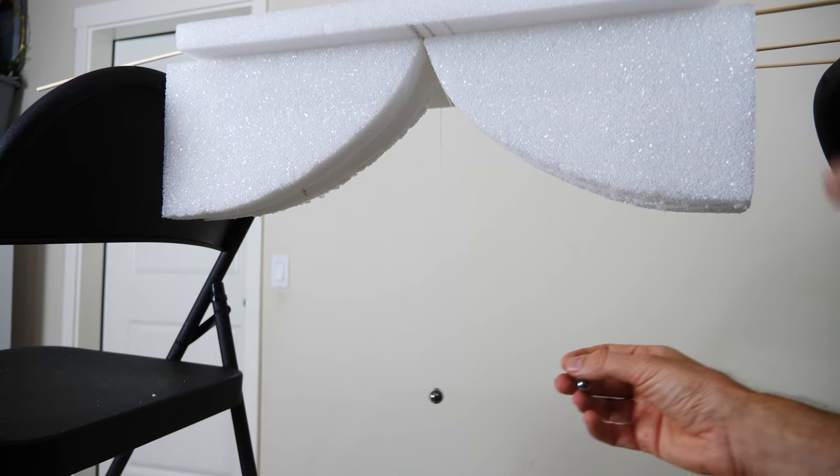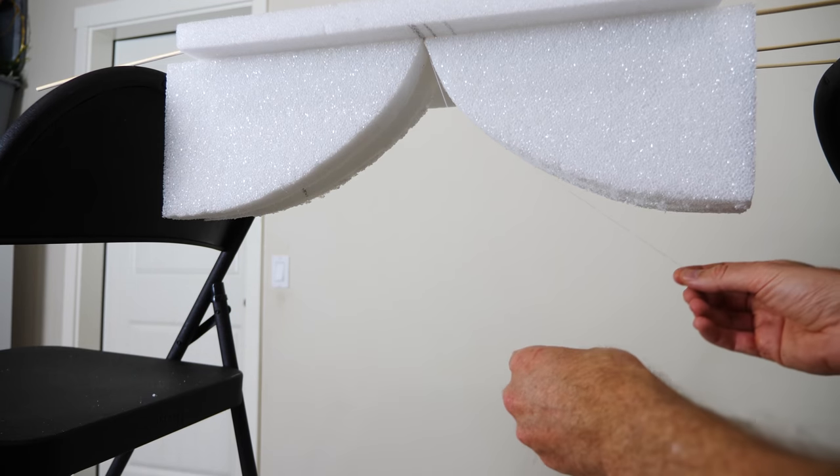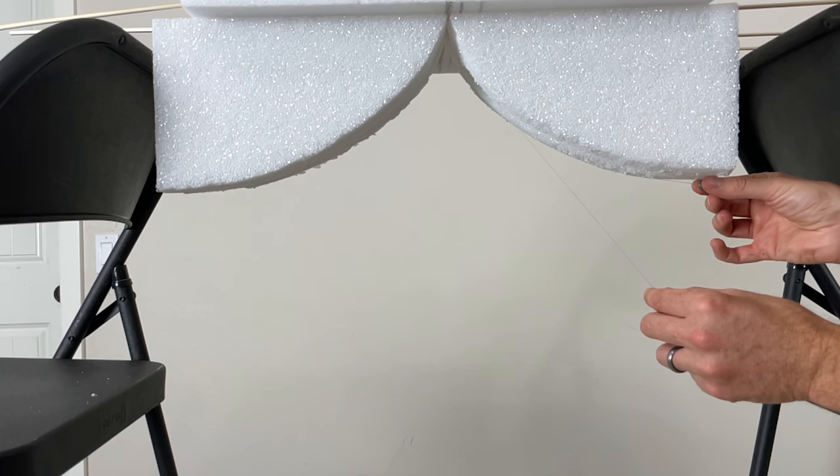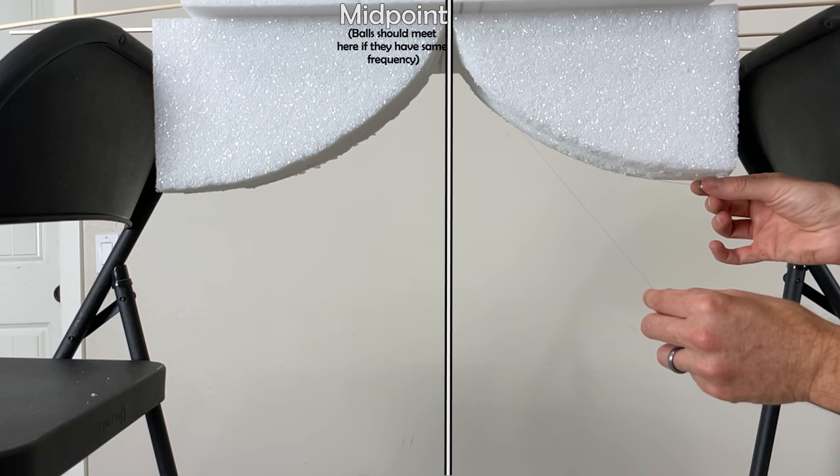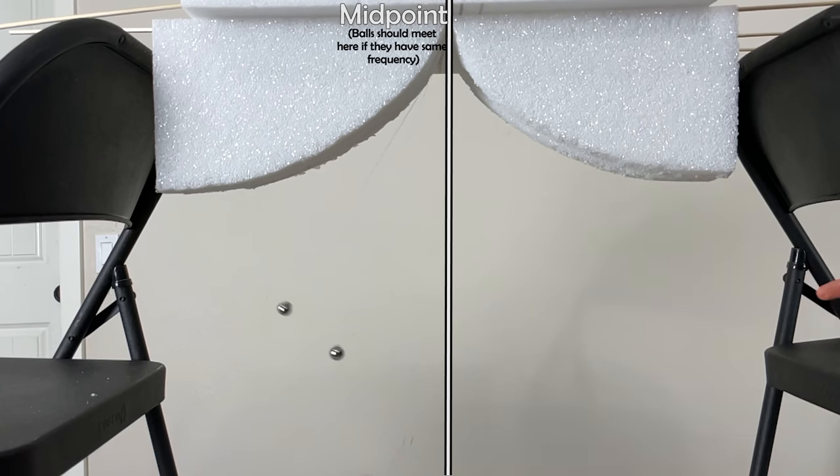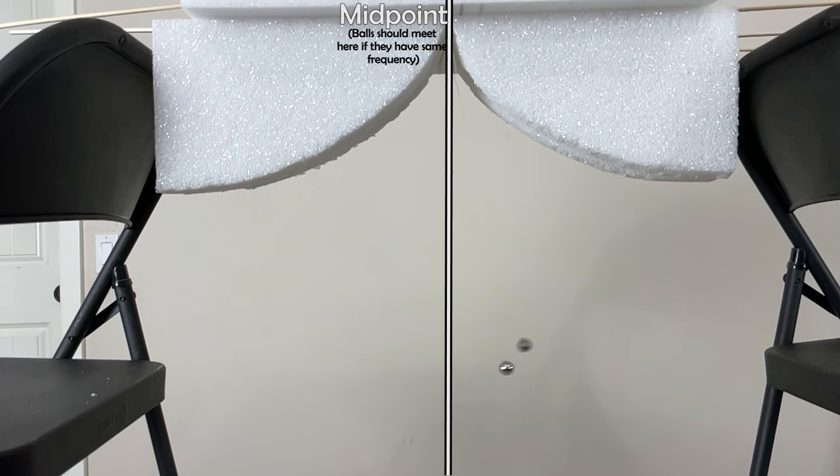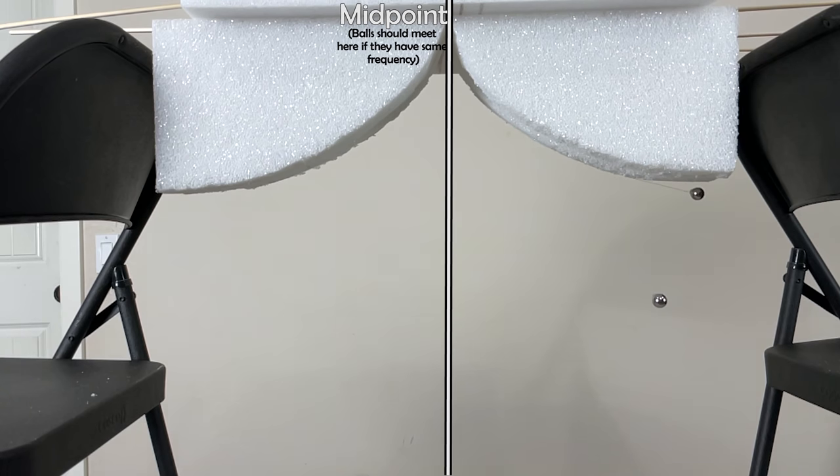So when it swings, it's going to follow that cycloid curve. So now let's see what happens when I release them at different heights. Now when they swing, they have to follow this curve. So now if we put the cycloid on either side of the pendulum, we can see that no matter where we start the ball swinging, they always cross the center at the same time.